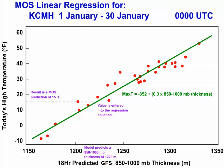The basic idea of model output statistics, or MOS forecasts, is that they use predicted variables from dynamic models along with actual observations to produce a forecast for a variable that dynamic models may not predict well.